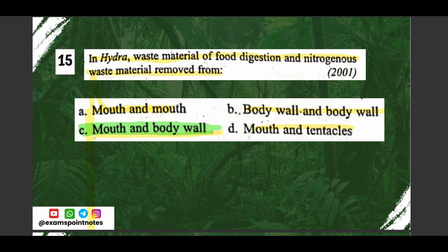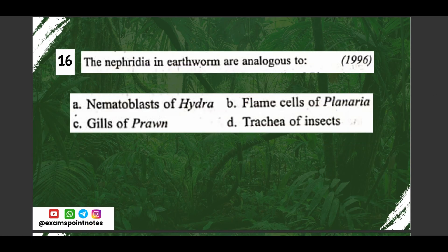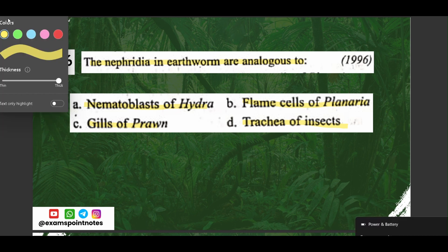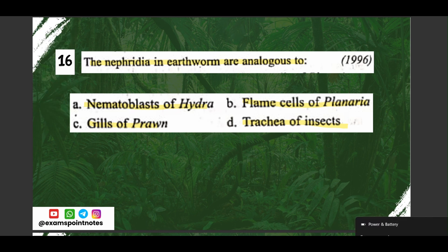Question number sixteen: the nephridia in earthworm are analogous to — A) nematoblasts of Hydra, B) flame cells of Planaria, C) gills of prawn, D) trachea of insects. The correct option is option B, flame cells of Planaria.